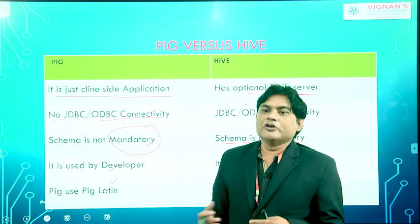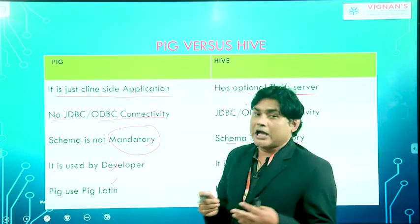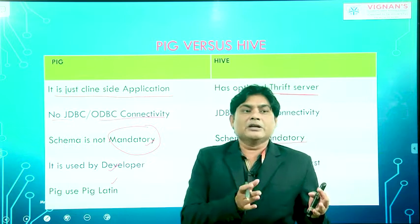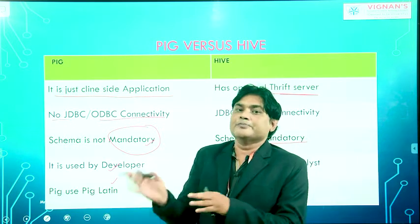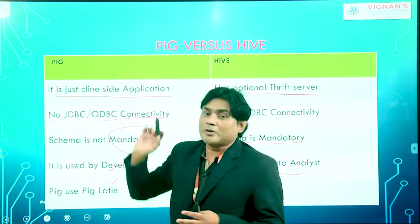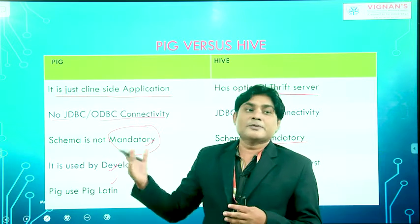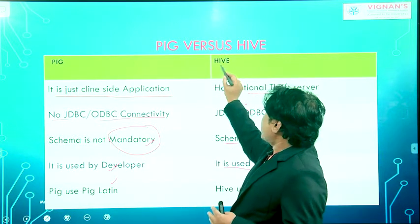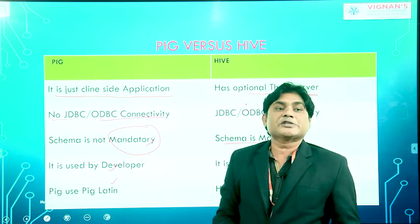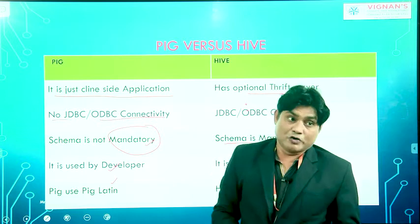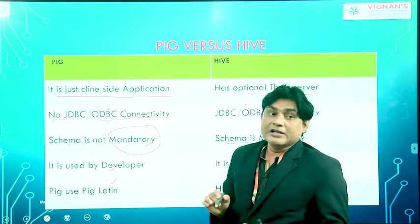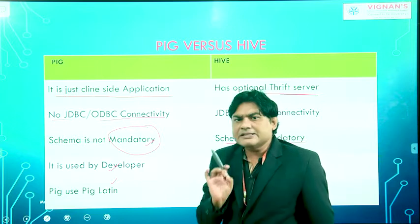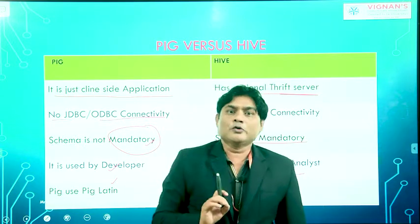Both Pig and Hive have one common goal - they solve the same problem. In Hive, SQL queries convert into a series of MapReduce programs. Similarly in Pig, the scripting language converts into a series of MapReduce programs. Pig was developed by Yahoo, whose developers were very good at scripting languages. Hive was developed by Facebook, whose developers were very good at SQL queries.